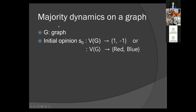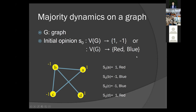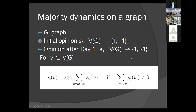I will define majority dynamics on a graph. Given a graph G and initial opinion S0 of all the vertices — I will sometimes use 1 and −1, or red and blue, so 1 means red and −1 means blue. Here is an example: initially the opinion of A is 1 (red) and opinion of B is −1 (blue).